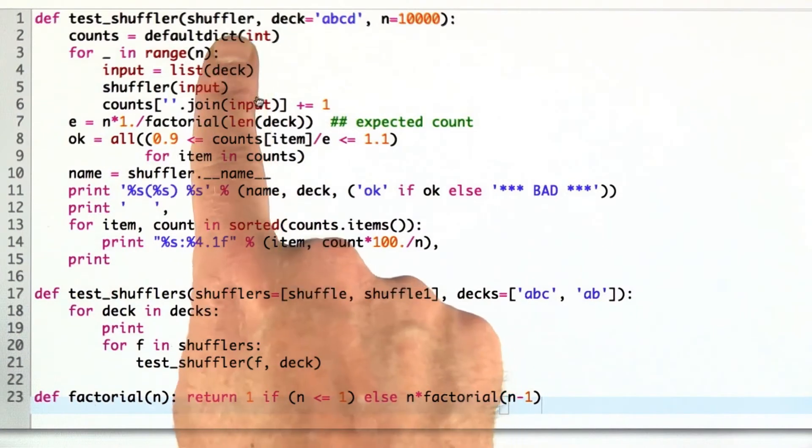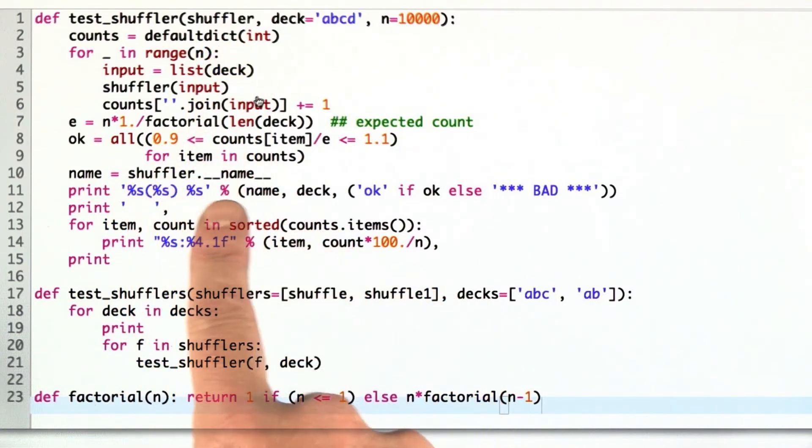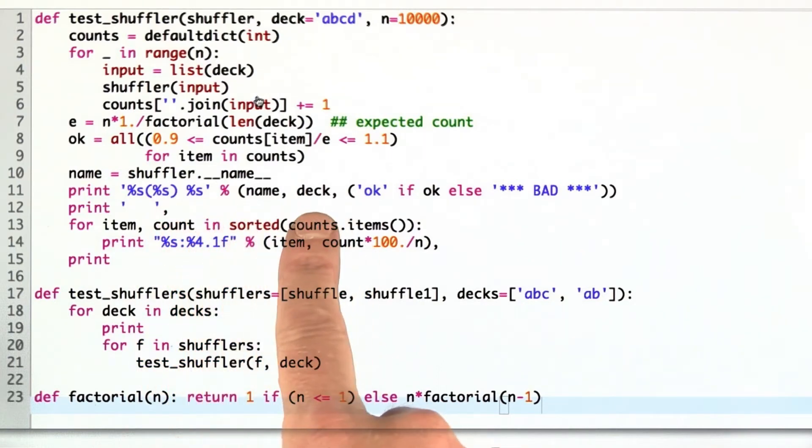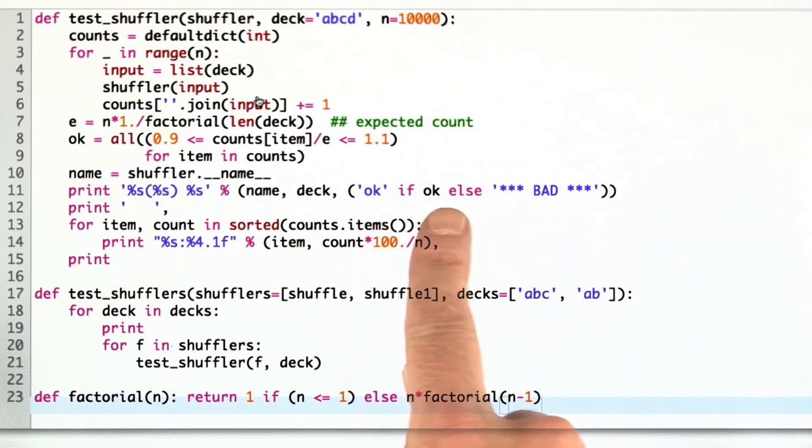Now, what we passed in as shuffler is a function. Functions have a name attribute. We're pulling out the name of the shuffler. Then we're just printing out the name of the shuffler, the deck we're shuffling, and whether it's okay or not. Then we print out the individual probabilities for each of the possible results.